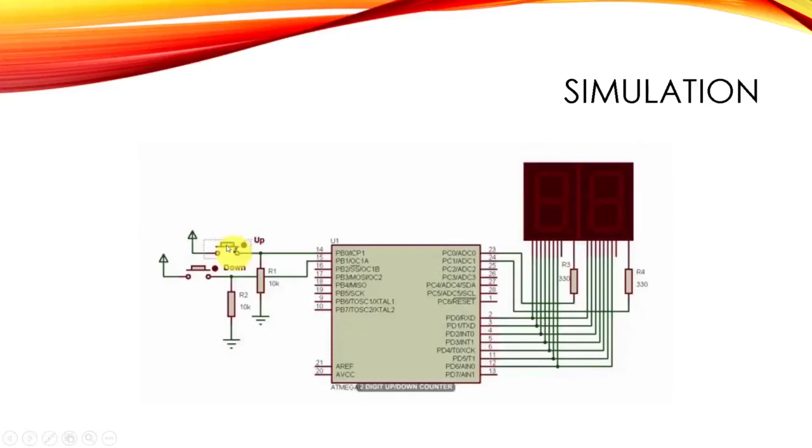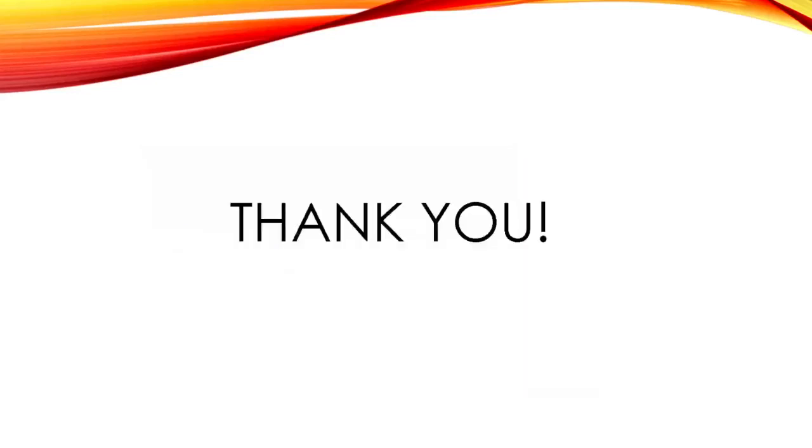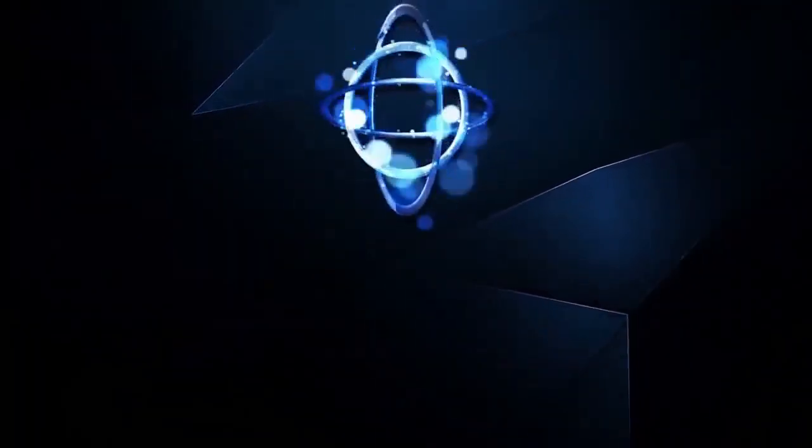So when the up button is pushed then we can see over here in this 7 segment display the numbers increase means if it is one it gets changed into two three and further and when the down button is pressed then the numbers decrease means seven six five and further.